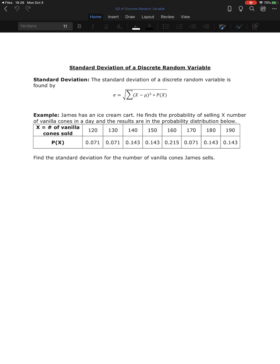So we're going to return to the example where we're looking at James's ice cream cart and he knows the probability of selling x number of vanilla cones. And then the probability of that. So let's find the standard deviation for the number of cones James sells. So let's look at what is the spread of the cones that James is selling in a given day.